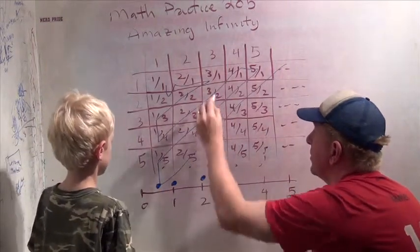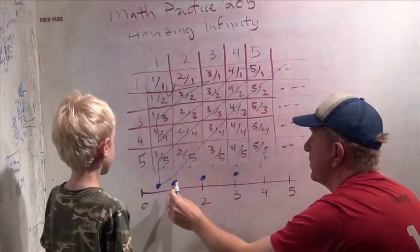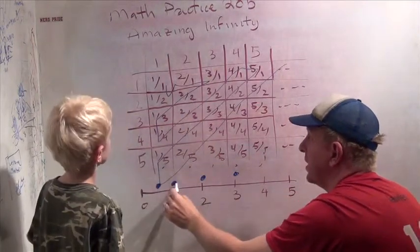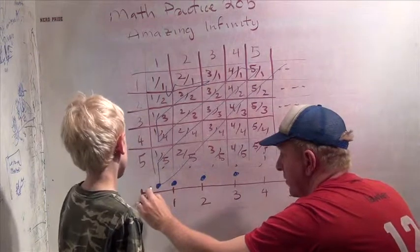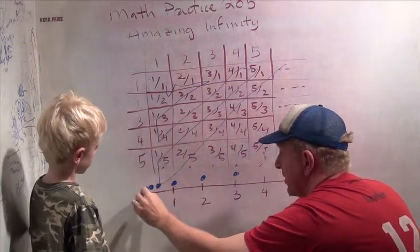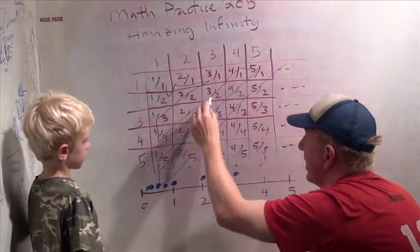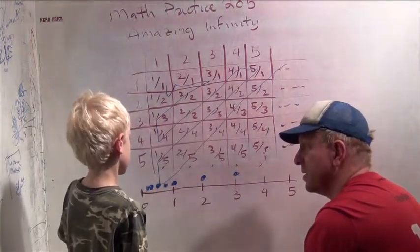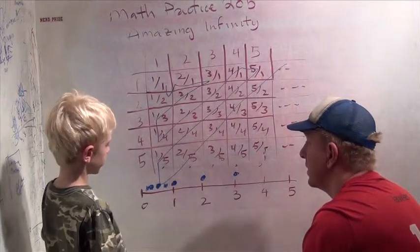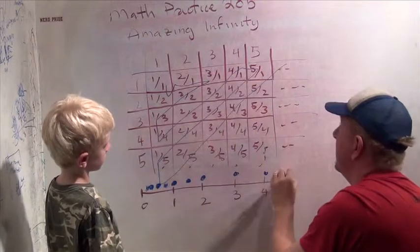That's the first one we hit. 1 half, which would be about here. 2 over 1. 3 over 1. 2 over 2, which is 1, we already hit that, but that's okay. Then 1 third, which is here. Then 1 fourth, which is maybe here. 2 thirds, over here. 3 halves, which is what, do you know what 3 halves is? 3 halves is 1 and a half. Very good.